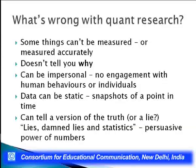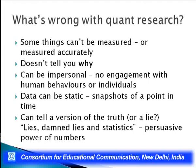What is wrong with quantitative research? First, some things cannot be measured or measured accurately. Second, it does not tell you why. Third, it can be impersonal with no engagement with human behavior or individuals. Fourth, the data can be snapshots at a point in time. Fifth, it can take a version of truth or a lie — statistics can be manipulated through the personal power of numbers.